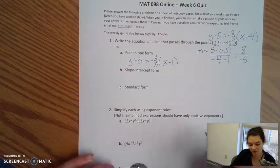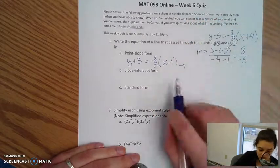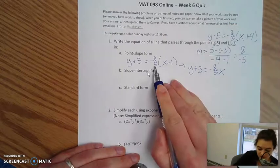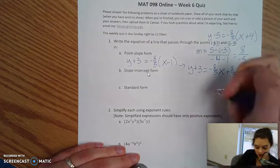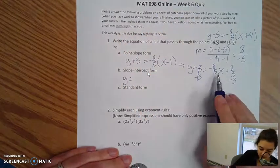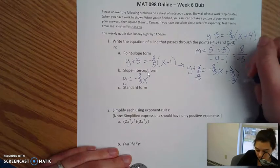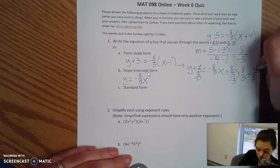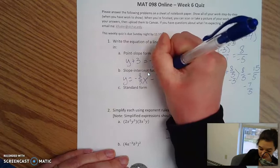To go from point slope form to slope intercept form, really what you're doing is distributing first and then getting your y by itself second. So distributing first, I would have negative 8 fifths times x, which gives negative 8 fifths x. And then negative 8 fifths times negative 1 would be positive 8 fifths. Then if I want to get my y by itself, I would just subtract 3 from both sides. So I'll have y equals negative 8 fifths x, and then I need to do 8 fifths minus 3. I need a least common denominator, so that's 8 fifths minus 15 fifths, which is negative 7 fifths. So y equals negative 8 fifths x minus 7 fifths, and that's slope intercept form.